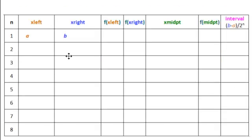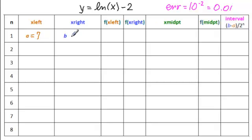This is a typical table for the bisection method. n is the number of iterations. This is the column for the left boundary of the x interval, the right boundary of the x interval, the signs of their function values respectively, the midpoint of this interval, and the sign of the function value of the midpoint, and the length of the interval. When this gets to be smaller than our error, we stop. Let's write our function at the top: y equals ln(x) minus 2. Our error is 10 to the minus 2, or 0.01 in decimal. Our left endpoint is 7 and our right endpoint is 8.